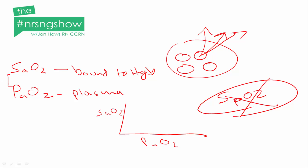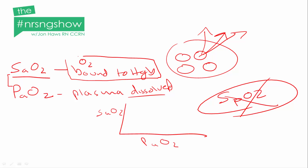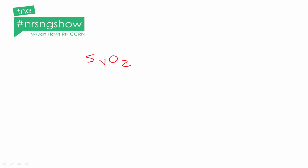SaO2 is oxygen bound to hemoglobin, and PaO2 is oxygen dissolved in plasma. Most of our oxygen in the blood is going to be bound to hemoglobin. SpO2 is really an indirect measure of arterial oxygen bound to hemoglobin. There is a test that can be done to determine how much oxygen the tissues are actually extracting — that test is SvO2 or ScvO2.